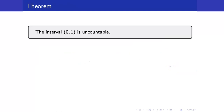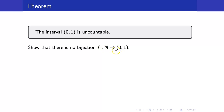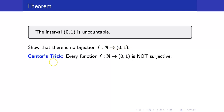Our first theorem: the interval (0,1) is uncountable. To show this, we need to show there is no bijection from the natural numbers to (0,1). Note that we can go from N to (0,1) or (0,1) to N interchangeably. The mathematician Cantor showed this is true. His trick was to show that every function from N to (0,1) is not surjective. I'll give an illustration first so the formal proof will be more concrete.